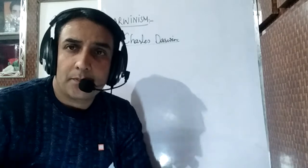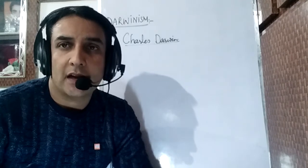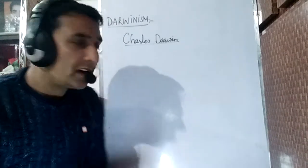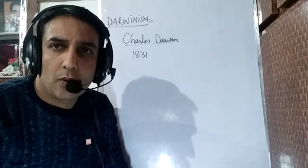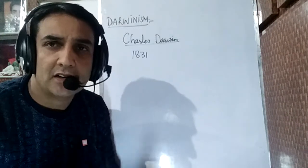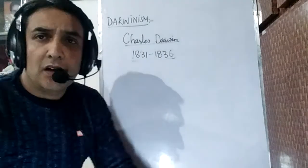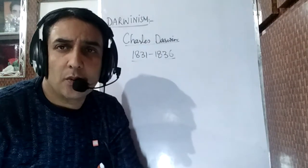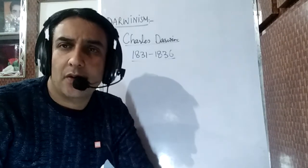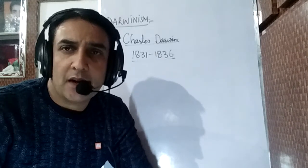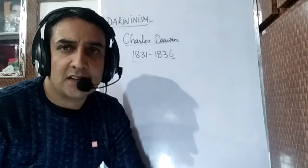First, we will try to understand how Darwin developed his concepts of evolution. In 1831, the British Admiralty arranged a voyage which was to be carried out from 1831 to 1836. Darwin was selected for this voyage, and during this tenure he extensively studied the flora and fauna of many places — mostly a particular chain of islands which we call the Galapagos Islands.